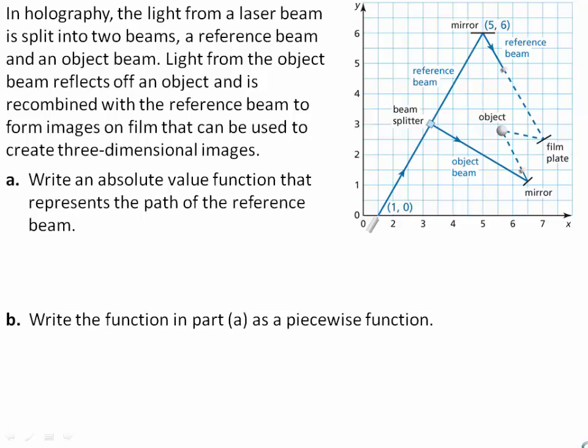Part A: Write an absolute value function that represents the path of the reference beam. The vertex of the path of the reference beam is given, so the function has the form g equals a times the absolute value of the quantity x minus 5, plus 6.